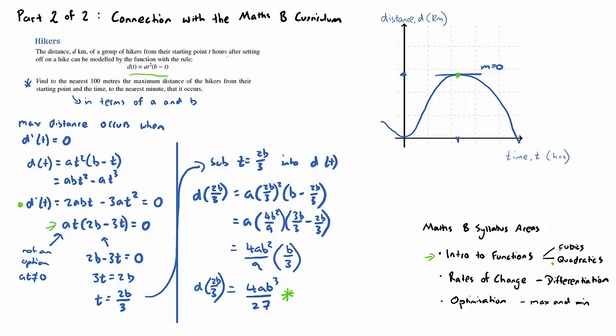So quadratics is a really key concept in this question, probably more so than cubic. Just the understanding of cubic is the general shape of a cubic and where the local maximum and minima lies. But quadratics is a really important part of this question. The second really important point is kind of a blend between rates of change and optimisation.